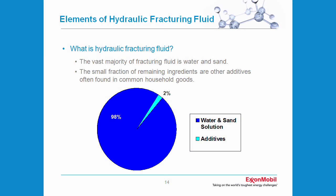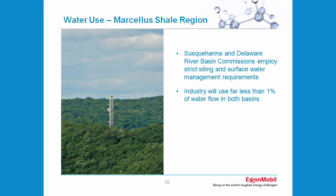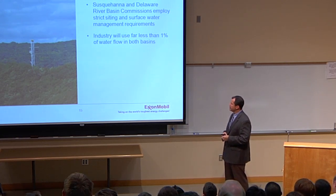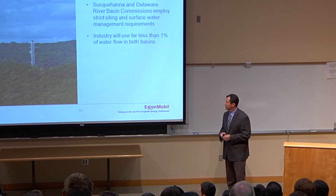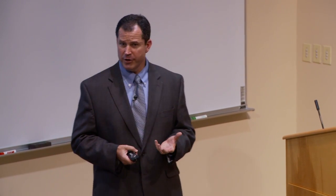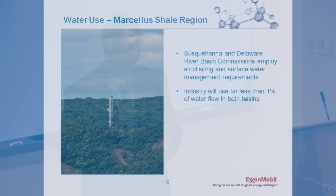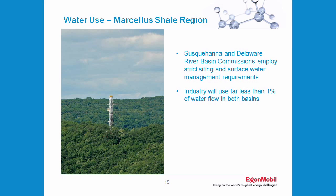In the Marcellus, water use for the Susquehanna and Delaware basin is controlled by strict siting and surface water management requirements with legislation that's in place. The water industry needs to develop all the Marcellus is projected to be a very tiny portion of the volumes generated and moved through this basin — far less than one percent. The water needs for one well is something like five million gallons. Sounds like a lot, but five million gallons equates to about eight minutes of water use in New York City. So with responsible practices of reuse and strict management following existing regulations, we can work together with communities we're operating in.